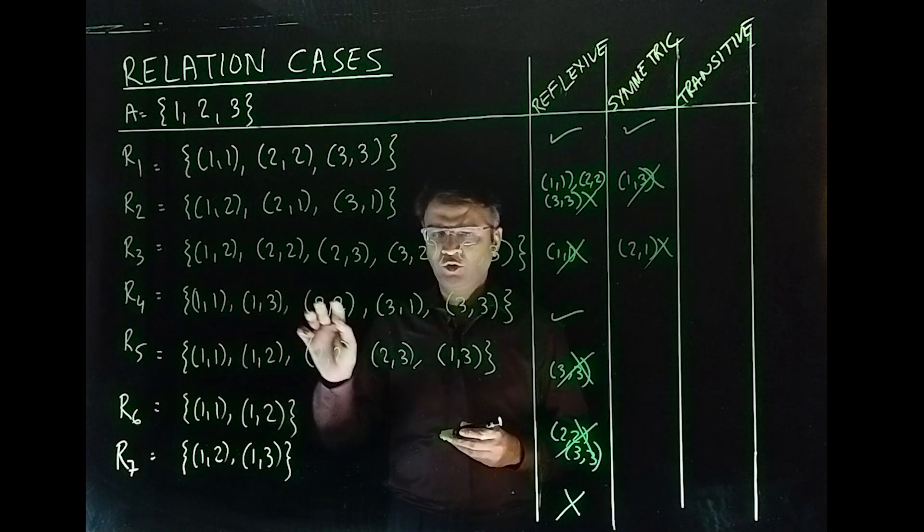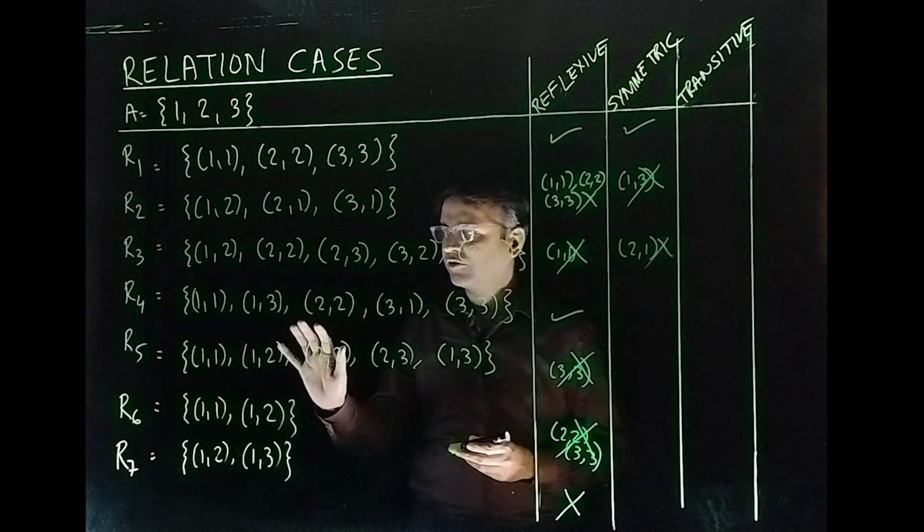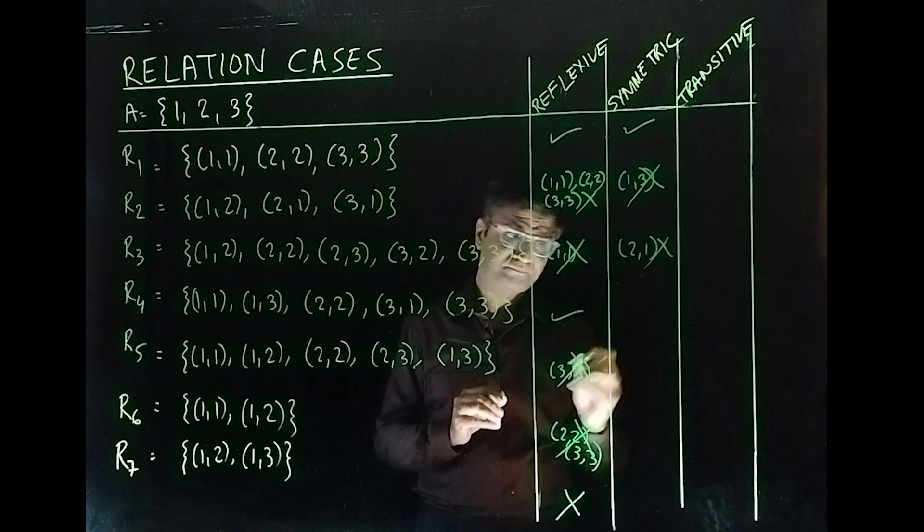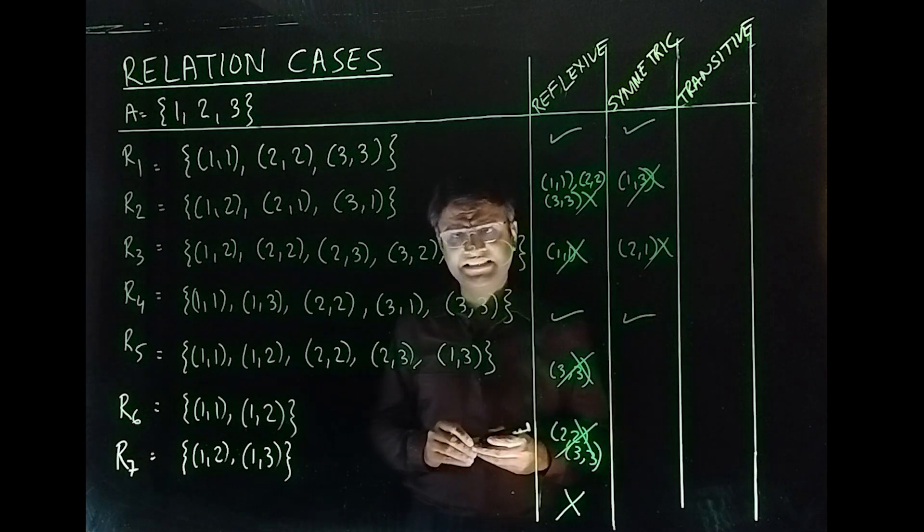So, you have (1,1), (2,2), (3,3). That's taken care of. You have (1,3) and its reflection (3,1). So, yeah. This is symmetric as well.